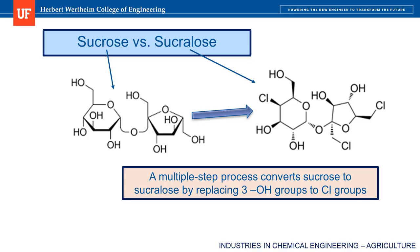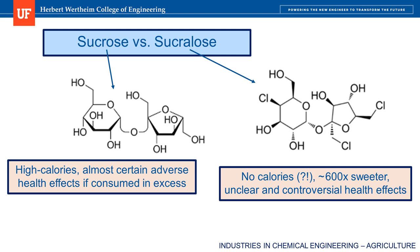Let's look at the structure of sucrose, one of the types of sugar molecules, and compare it side-by-side to sucralose, which you may know by the trade name Splenda. Sucralose can be made from sugar in a multiple-step process where three of the OH groups are replaced by chlorines. Other than that, the molecular formulas are identical. The only difference is three atoms, and yet sugar tastes delicious but is very high in calories. Yet sucralose has zero calories and is about 600 times sweeter than sugar. How is this possible given that the molecules are so similar?